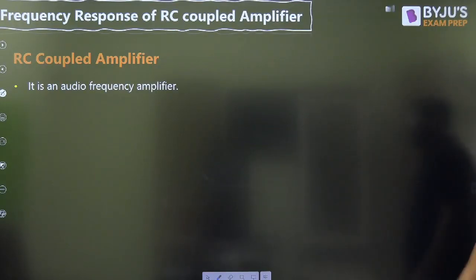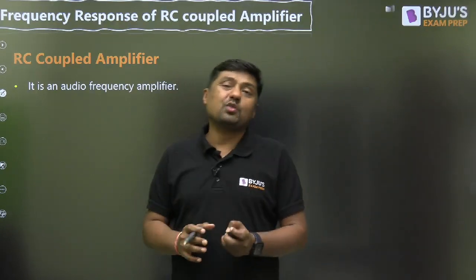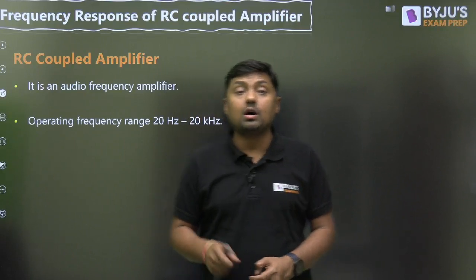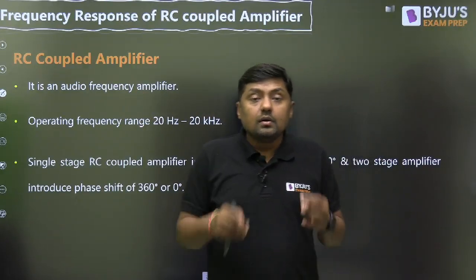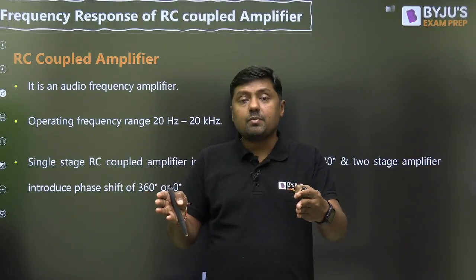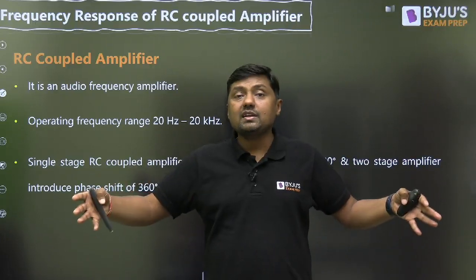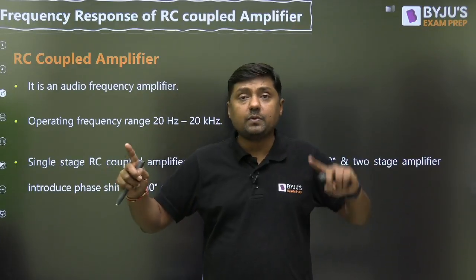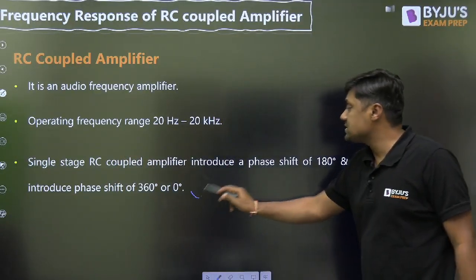What is the RC coupled amplifier? It is an audio frequency amplifier. Audio frequency means from 20 Hz to 20 kHz — this is the range. For a single stage RC coupled amplifier, it will give 180 degrees phase shift. If we connect two stages in cascade — 180 plus 180 — it will give 360 degrees or 0 degrees phase shift.